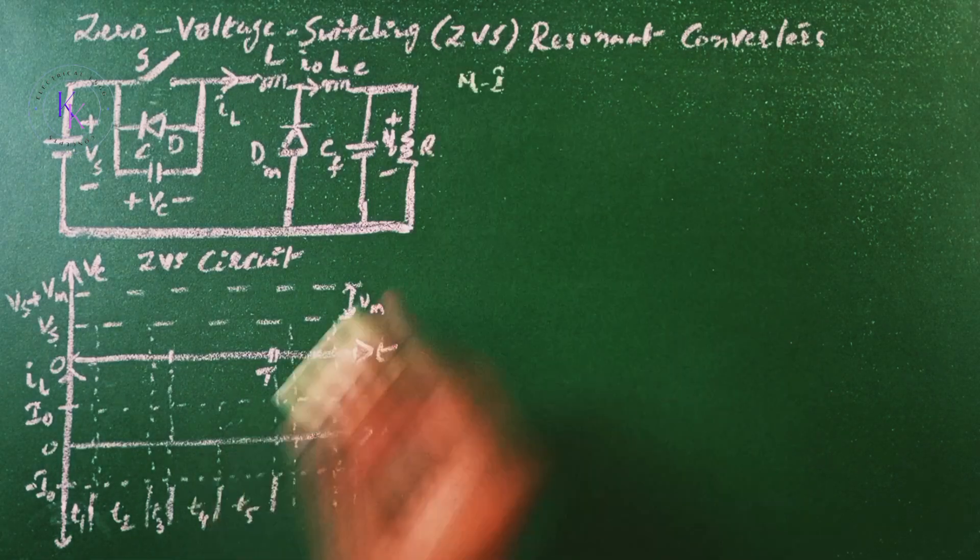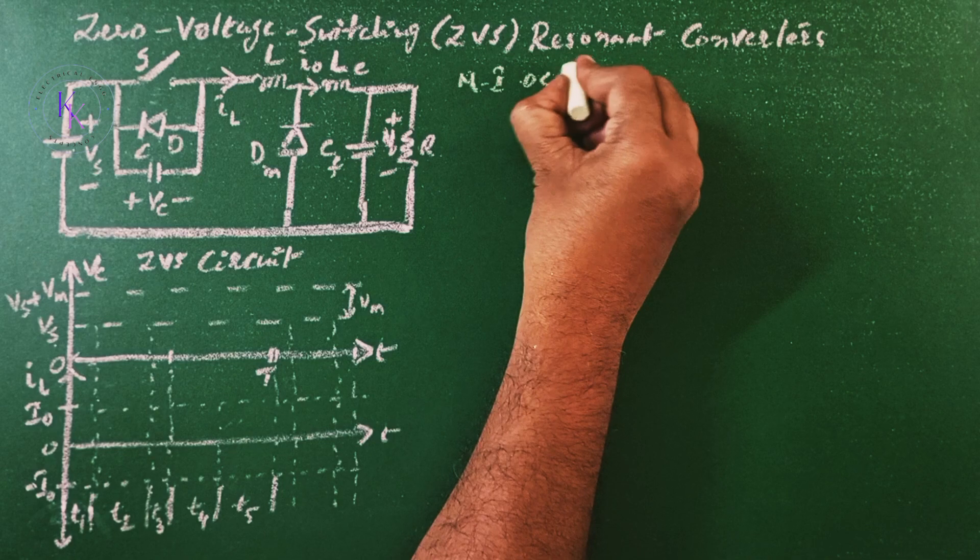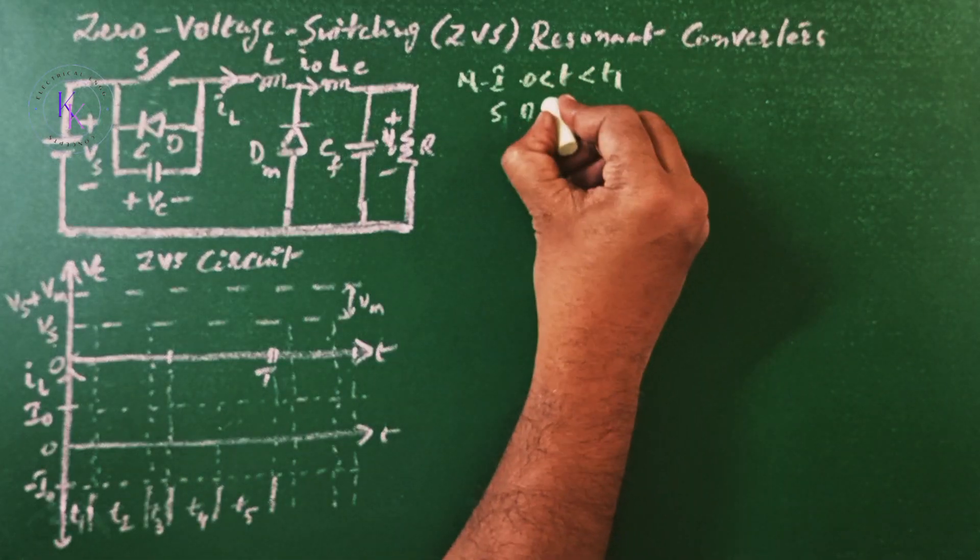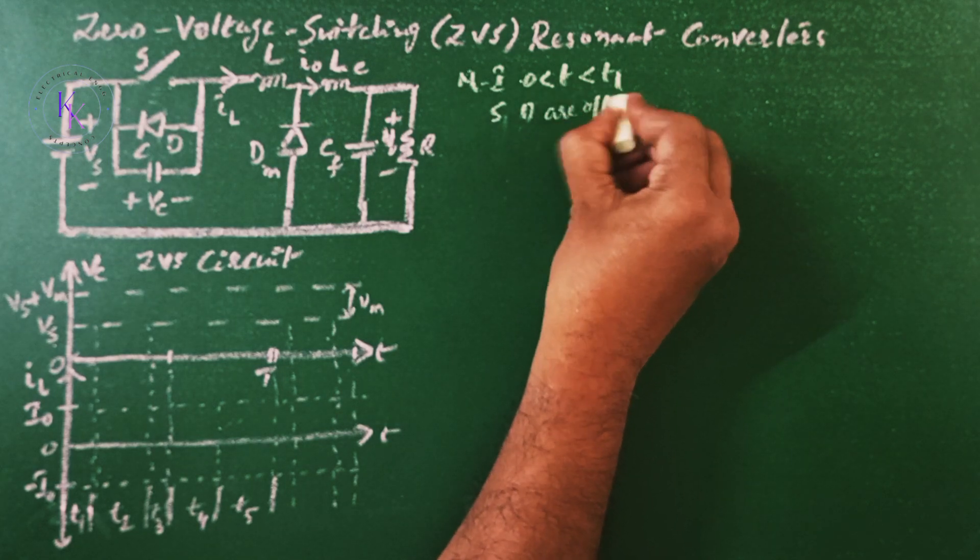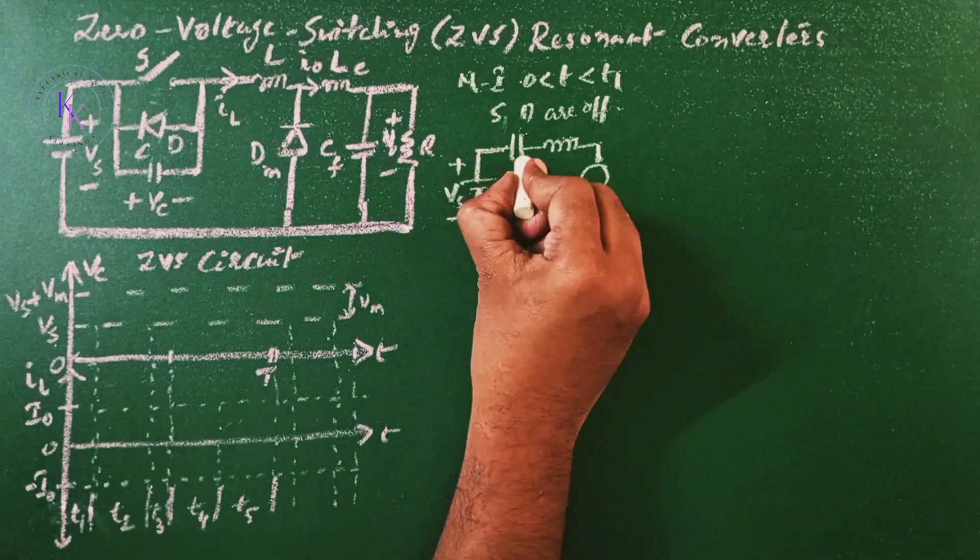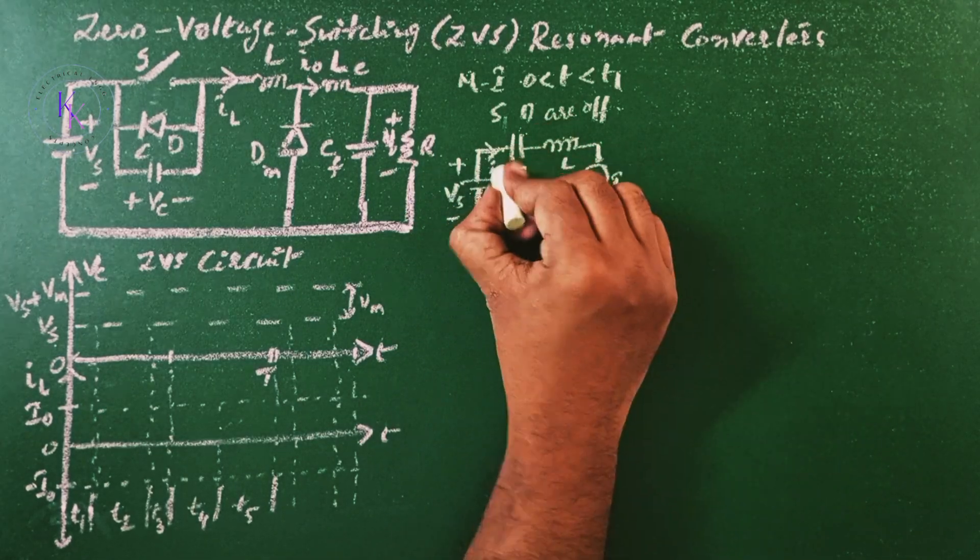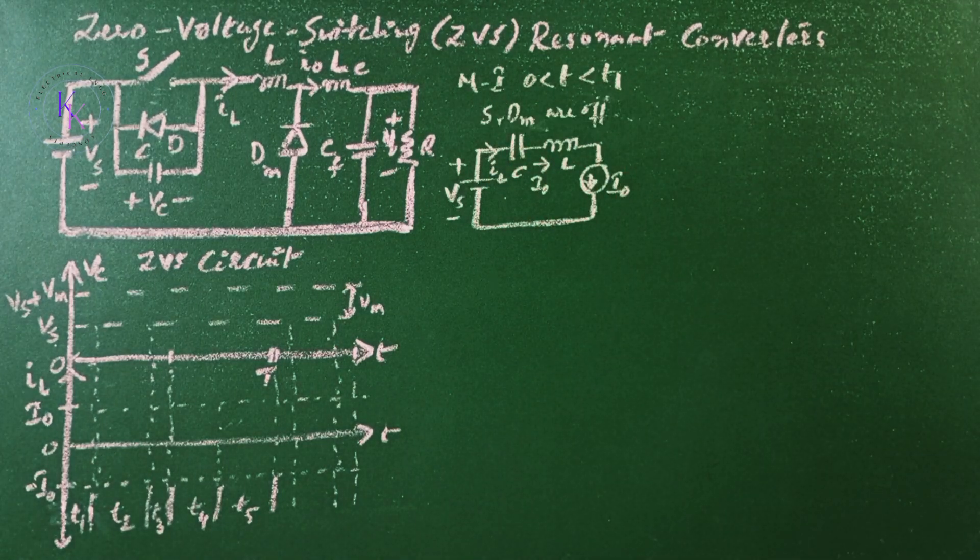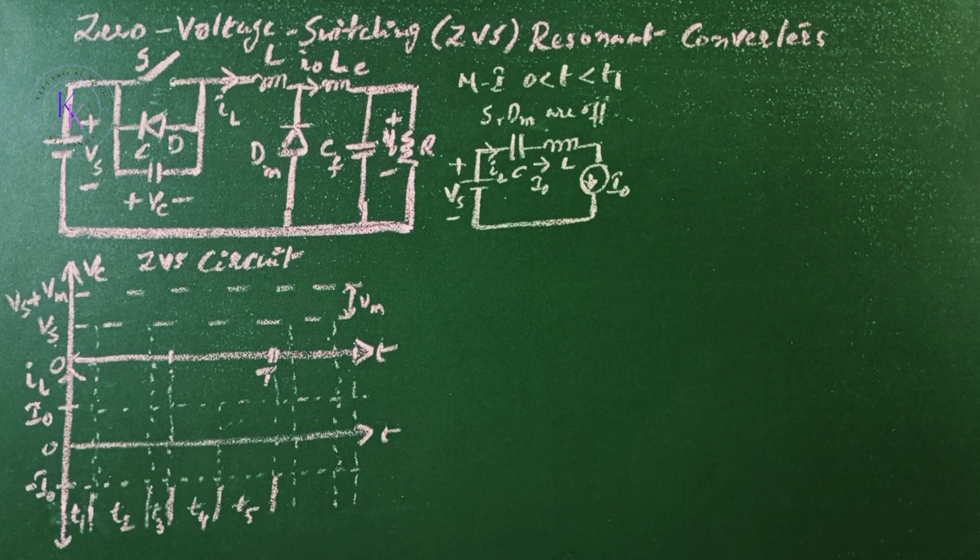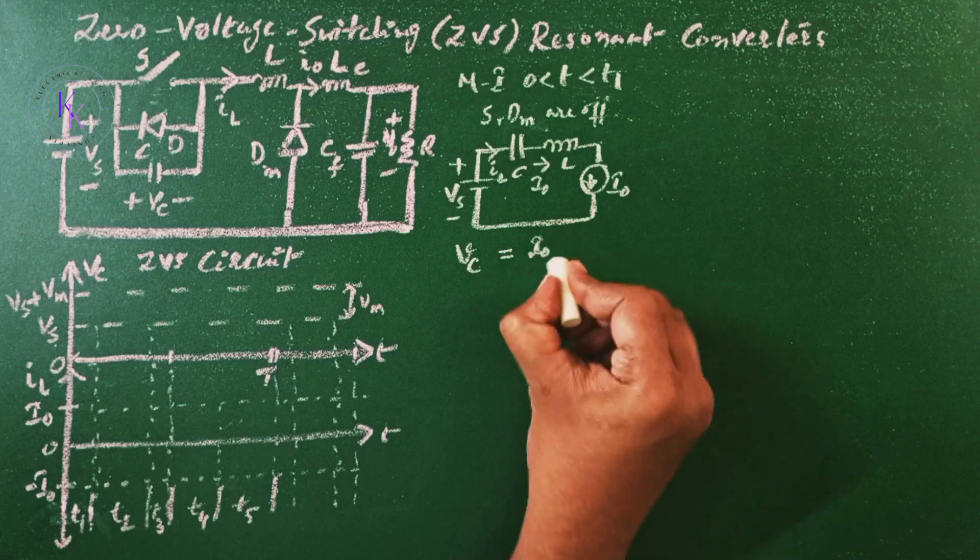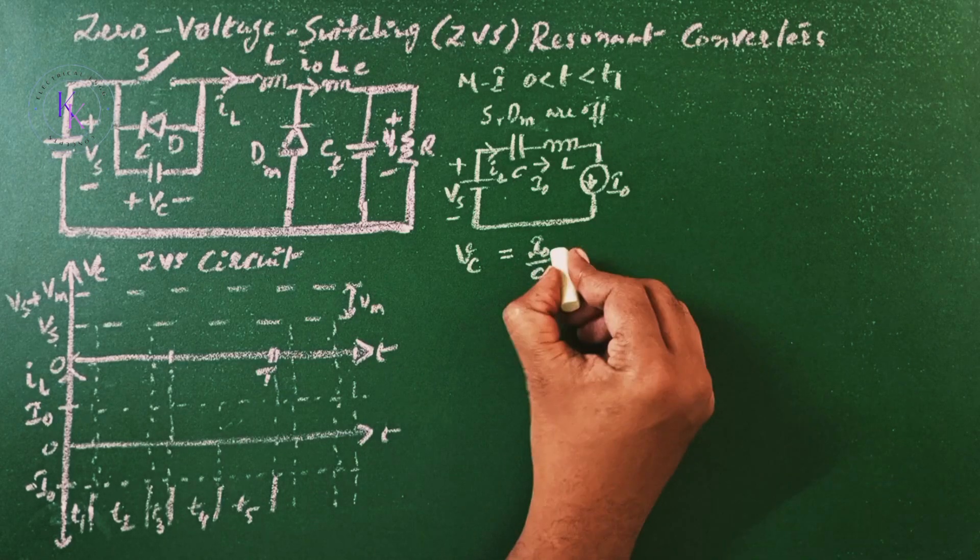Mode 1: this mode is valid between zero and T1 when both the switch and the diode are off. Then the equivalent circuit will be S and DM are off. Now the capacitor C charges at constant rate of the load current I0. The capacitor voltage VC, which is going to rise, is given by the total current I0 divided by C multiplied by the time T.